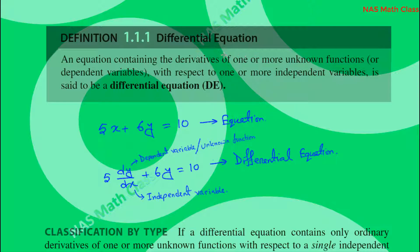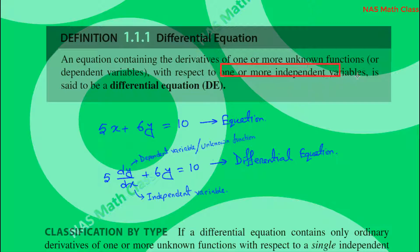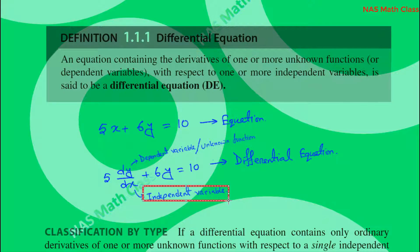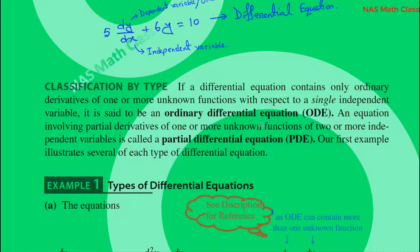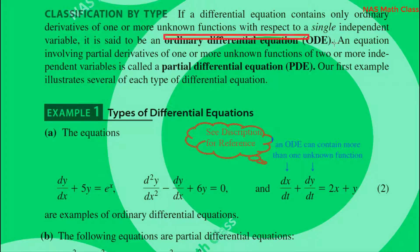In a differential equation, we have one or more unknown functions or dependent variables, with respect to one or more independent variables. The variable we differentiate, like y, is the dependent variable, and the variable with respect to which we differentiate, like x, is the independent variable. Based on these variables, we classify differential equations into ODE and PDE.